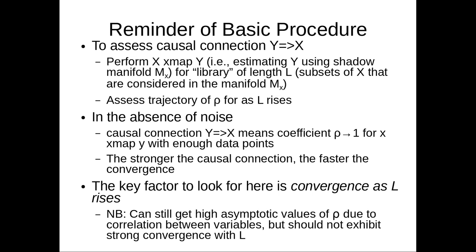CCM seeks to assess the causal influence of variable y on variable x by performing x cross map y. Here we are estimating y using the shadow manifold x for different library sizes, different subsets of the x time series that are considered. Then we assess how rho changes as L rises.